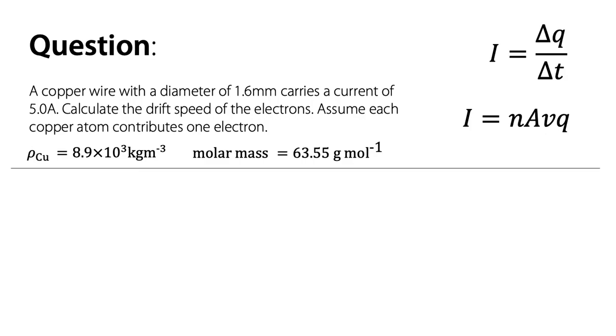The molar mass of copper, taken from a periodic table, is 63.55 grams per mole. So for every 63.55 grams of copper we have, we have one mole of copper atoms. I = nAvq is the equation we're looking for v for, the drift velocity.